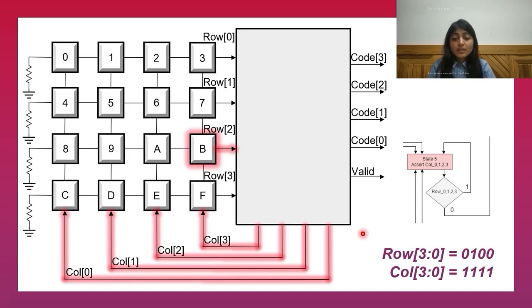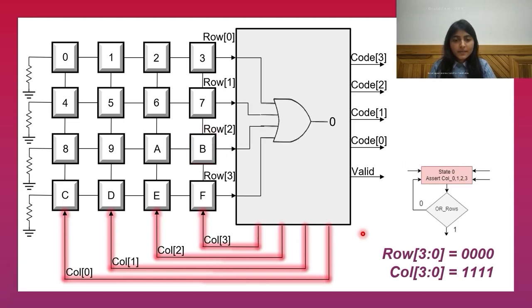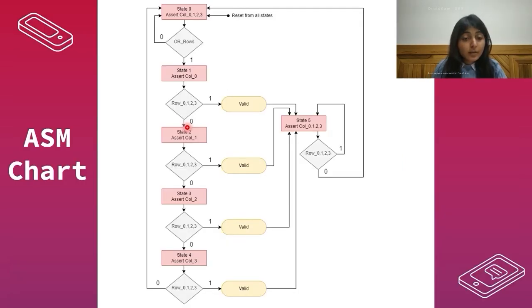This can be called state 5 of the machine, and this state is exited only when the button is de-asserted, which sends the machine back into state 0.